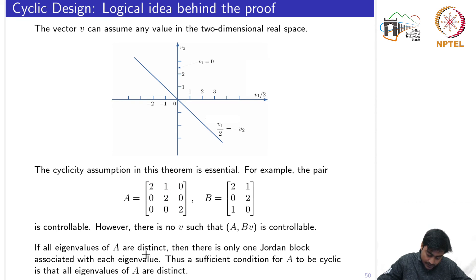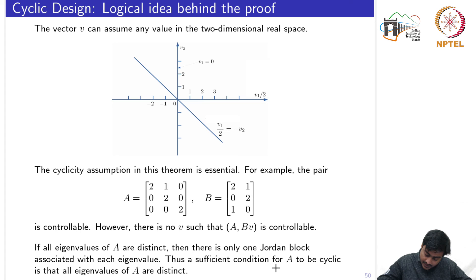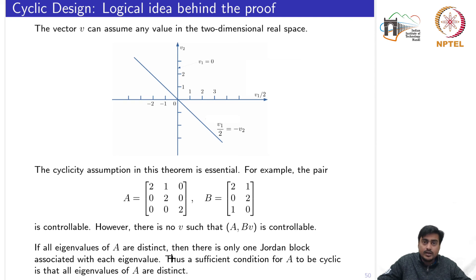If all eigenvalues of A are distinct, it is already ensured there is only one Jordan block per eigenvalue. Thus, a sufficient condition for A to be cyclic is that all eigenvalues of A are distinct. The issue only arises when A has repeated eigenvalues — in that case we must verify there is only one Jordan block associated with the repeated eigenvalue.